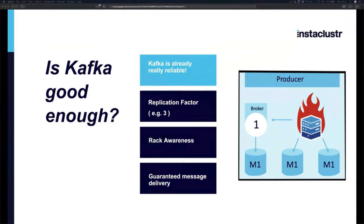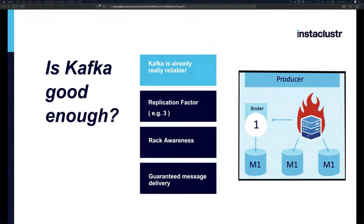Another reliability feature is guaranteeing message delivery. Producers can be configured to only receive an acknowledgement once the message has been replicated a sufficient number of times. On the consumer side, they commit offsets back to the Kafka cluster to confirm which messages have been processed, so if a consumer dies it can resume from where it left off.